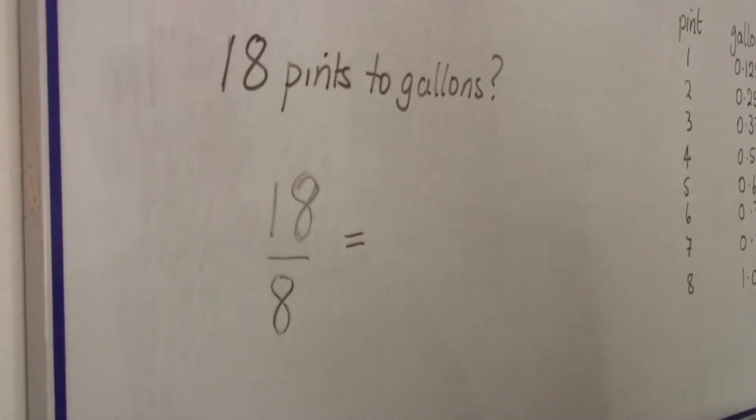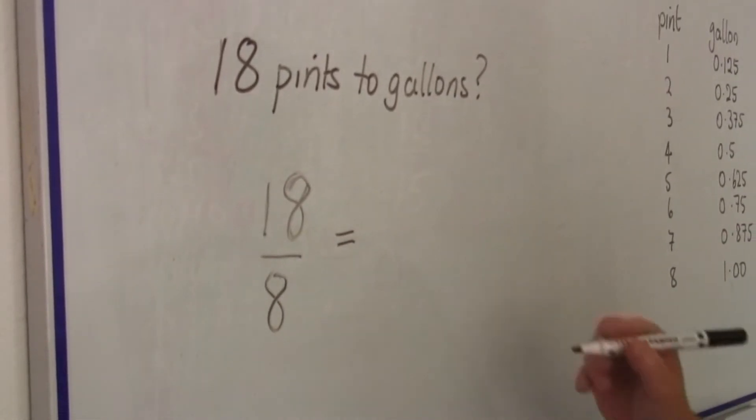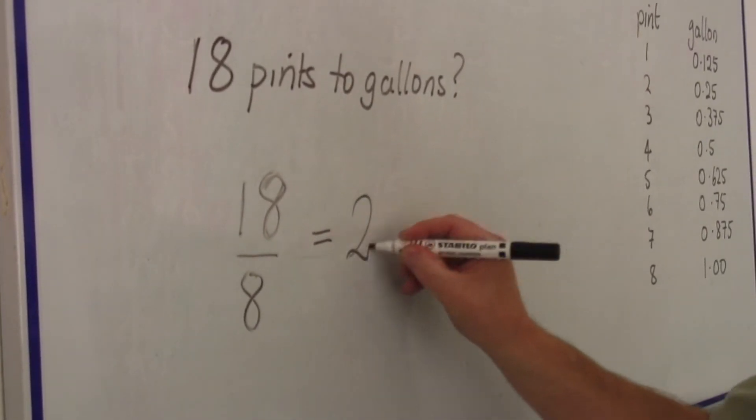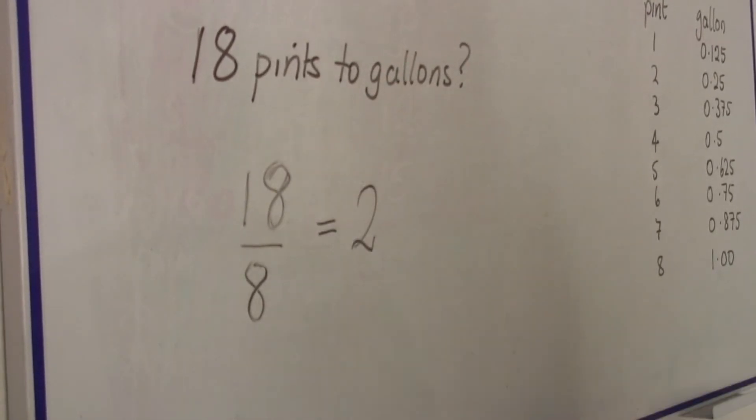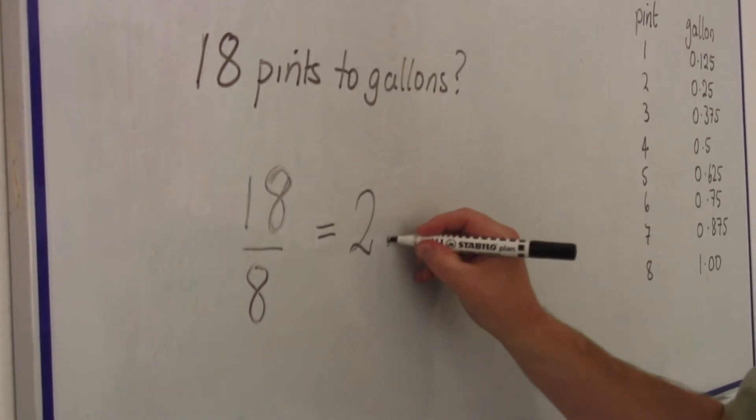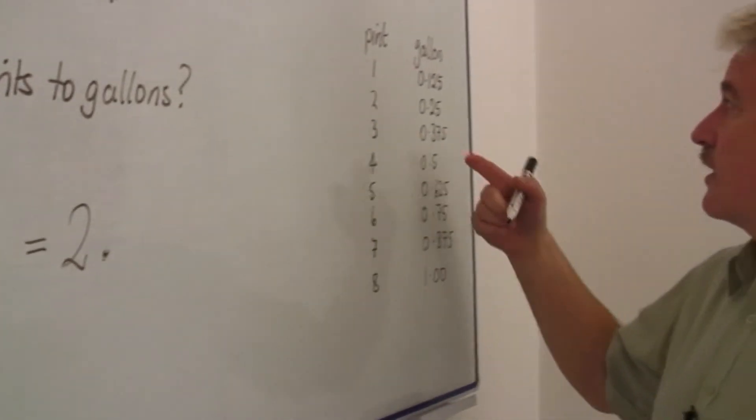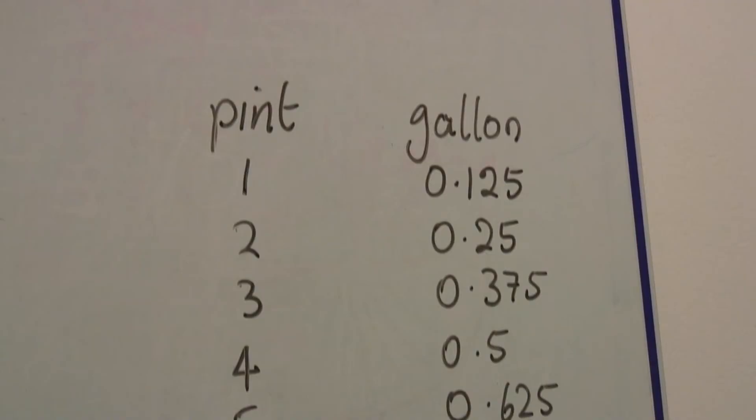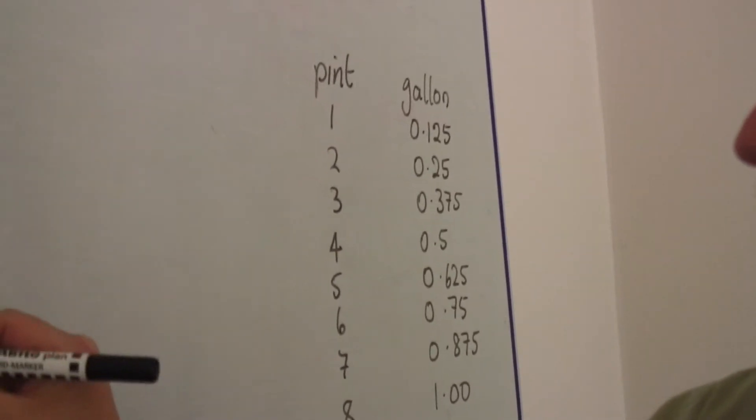18 divided by eight. Well, we know two eights are sixteen so it's two and there's two pints left. Well, we've already done the calculating here. Two pints is 0.25, 0.25 gallons.